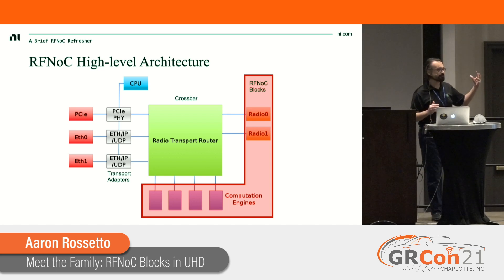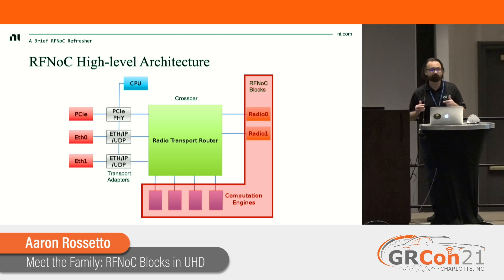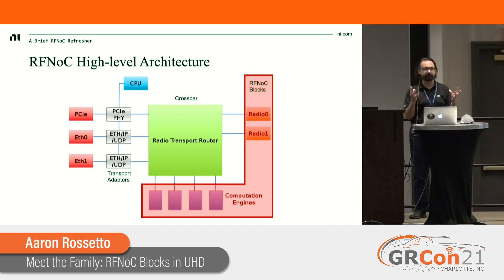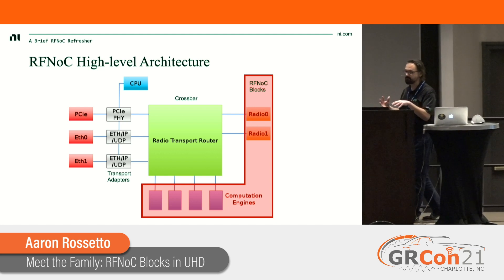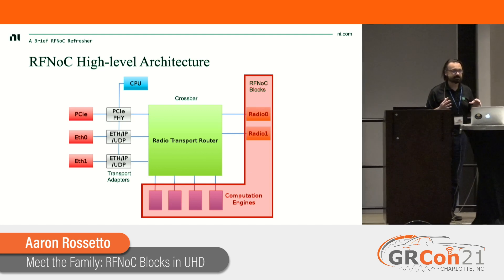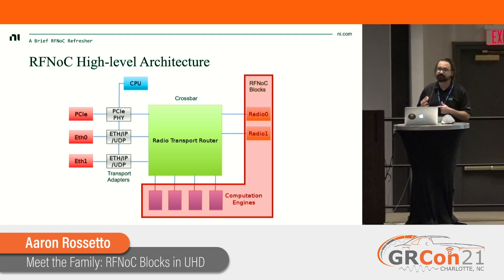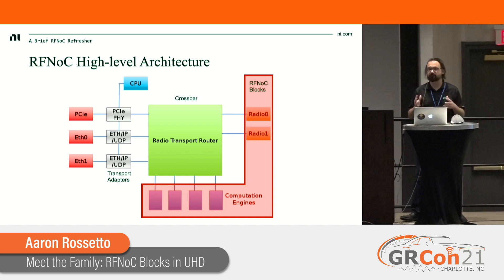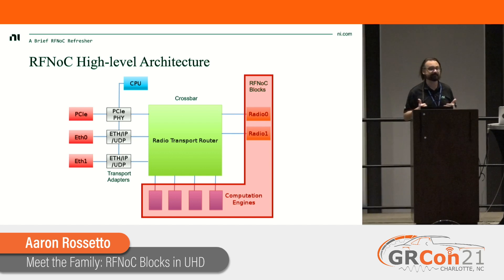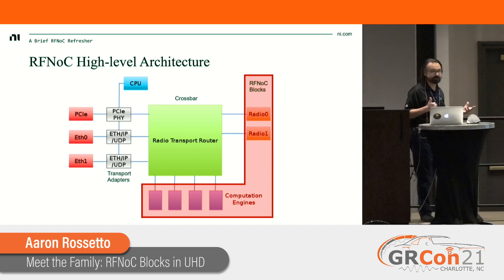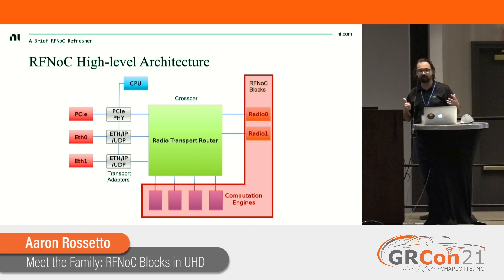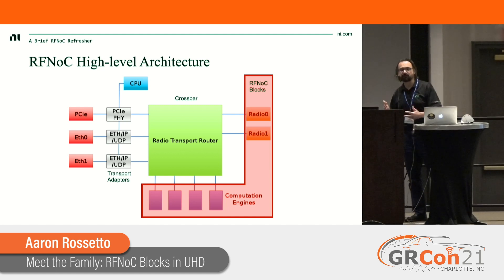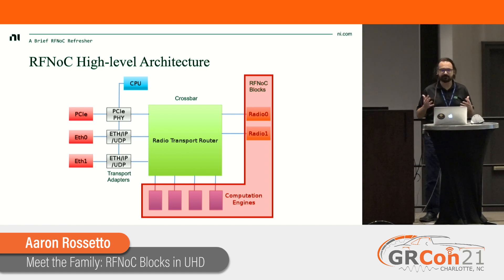Looking at the RFNoC architecture from a high level: on the left-hand side you have the transport adapters, which provide ingress and egress for radio data. In the middle is a router that can connect endpoints to each other. The computation blocks — the DSP elements highlighted in red — are what we're talking about today. These ship in UHD, or alternatively you can create them through the out-of-tree RFNoC block creation process, for which Neil Pandeya and Jonathan Pendlum have led tutorials available on YouTube.